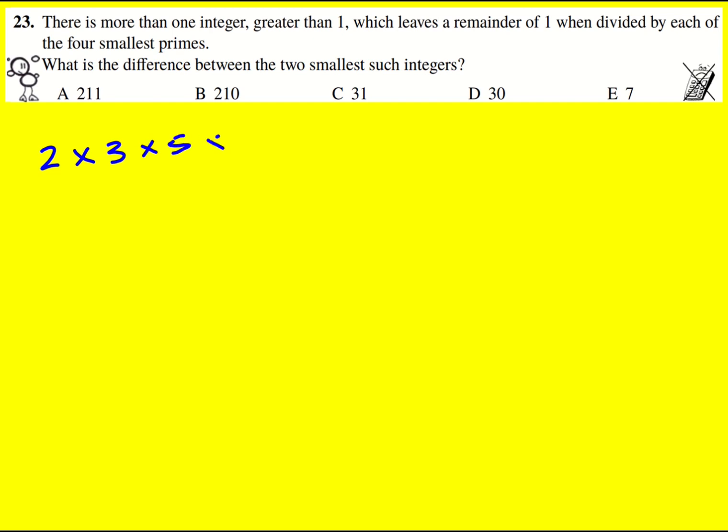2 times 3 times 5 times 7. We can actually do 2 times 5 to give 10, and 3 times 7 to give 21, so we're going to get 210.